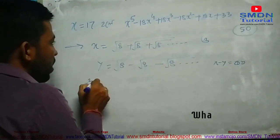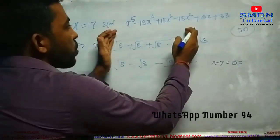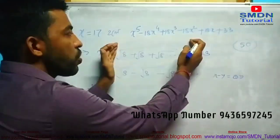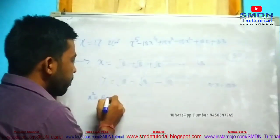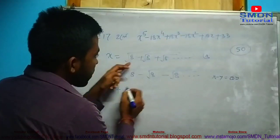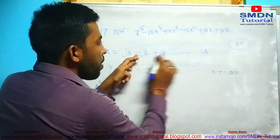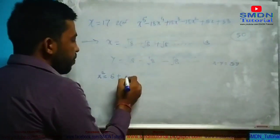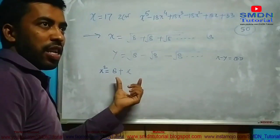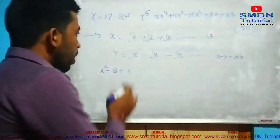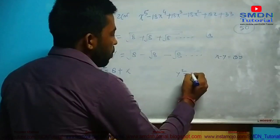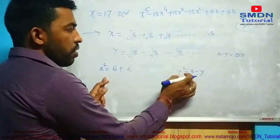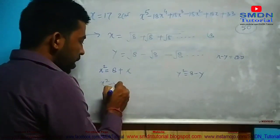So what is x? If x is the square root over 8, then x squared equals 8 plus x. Similarly, y squared equals 8 minus y. So here x squared equals 8 plus x, and we can work out x minus y.